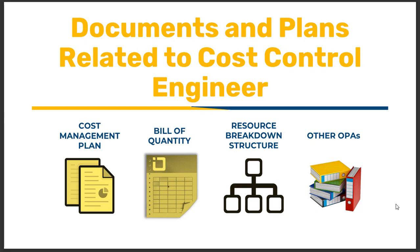Another document the cost-control engineer interacts with is the resource breakdown structure (RBS), which shows what types of resources are needed and in what quantities. Lastly, there may be other organizational process assets such as templates, systems, or cost-estimating methods used by the cost-control engineer.